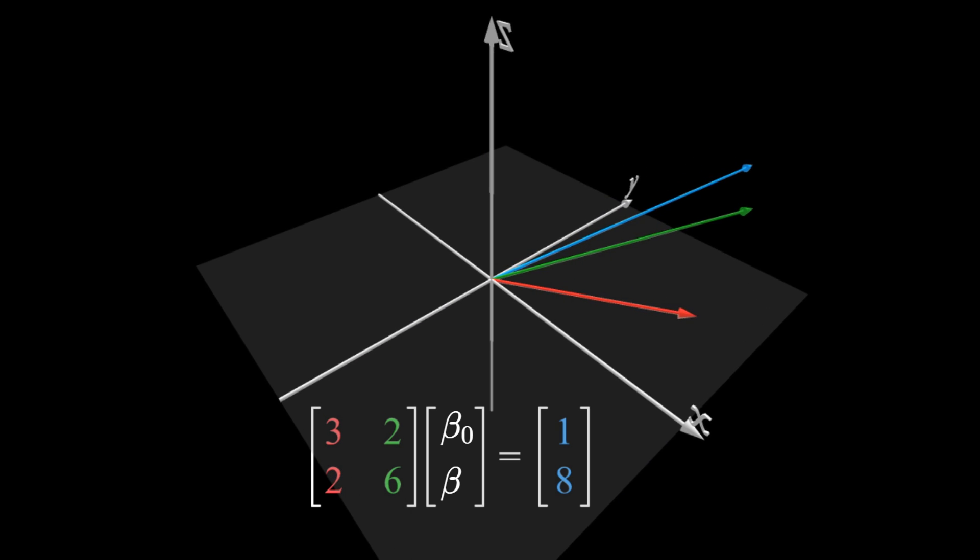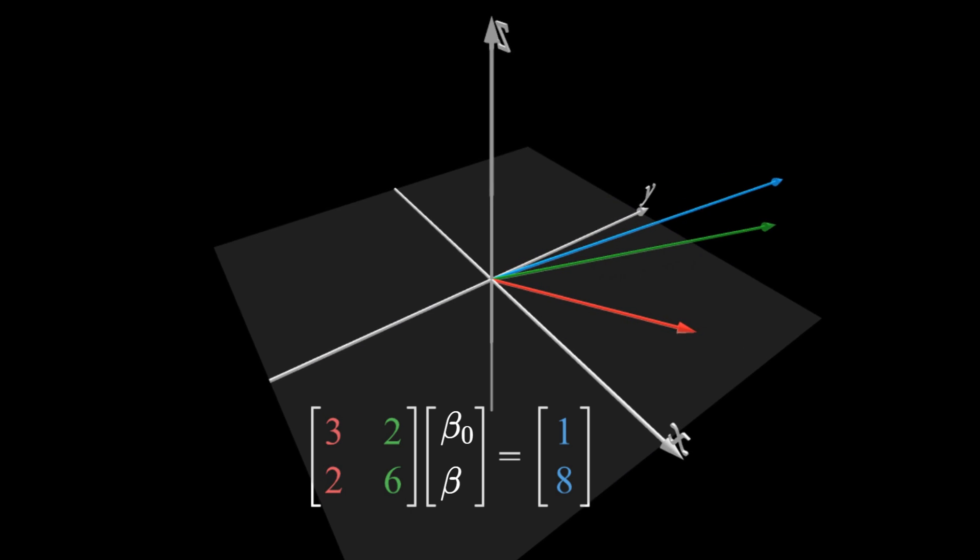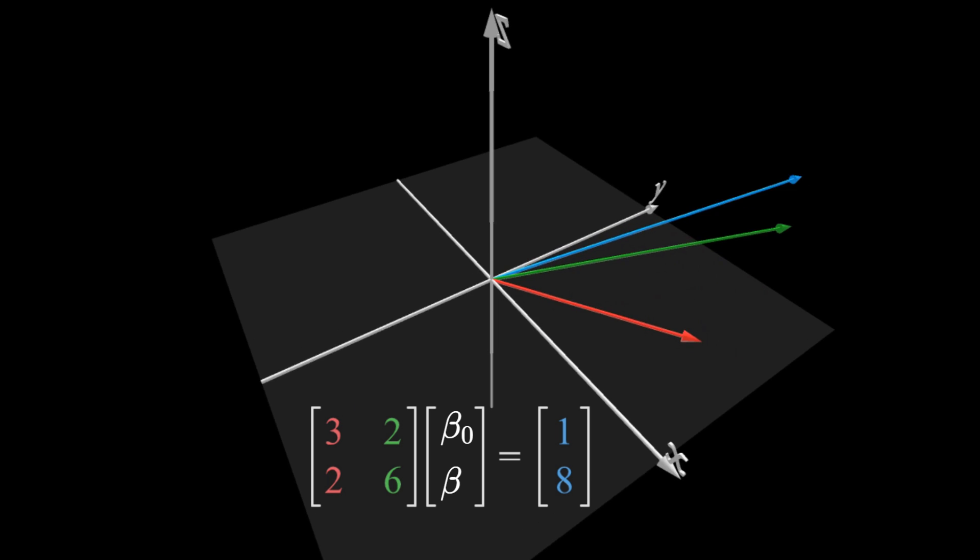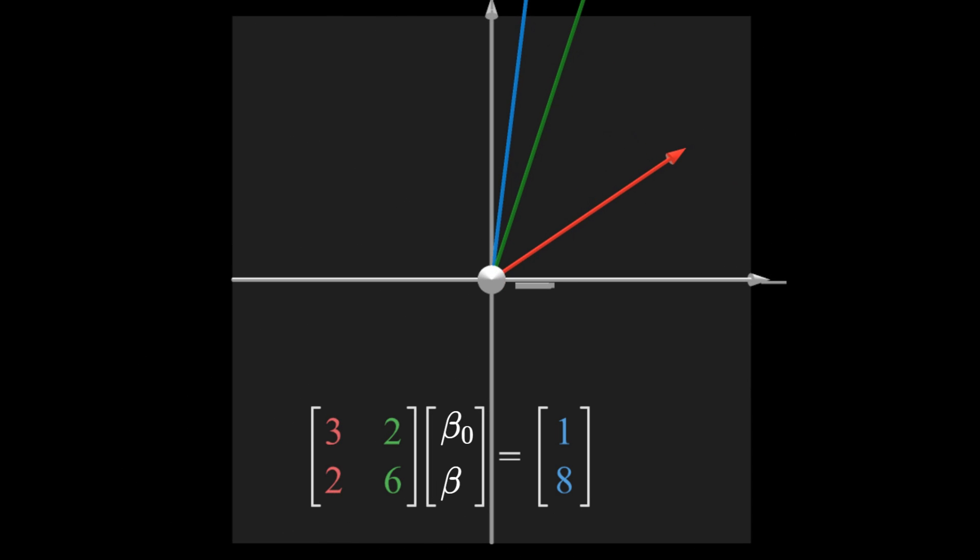A 2 by 2 matrix times our coefficient vector equals a 2D vector. Now we are in the homestretch. To solve for beta, all we need now is applying the inverse of this 2 by 2 matrix to both sides, and bada boom bada bang, the blue vector is the solution to our normal equations.